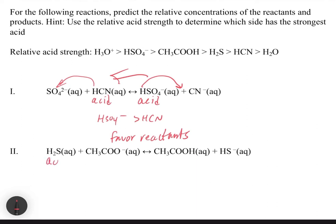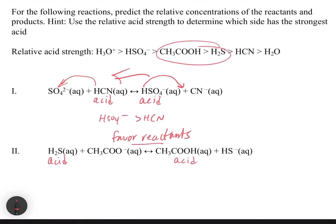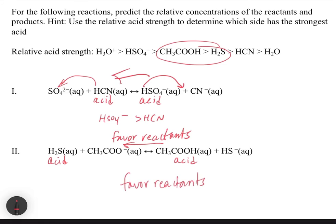In the second sub-example, the two acids are H₂S and acetic acid. The question is which one is the stronger acid. According to the chart, acetic acid is stronger than H₂S, so again that's going to push harder and we're going to favor the reactants.